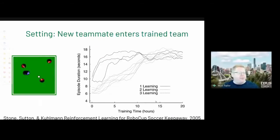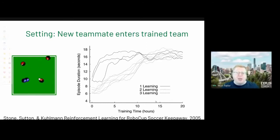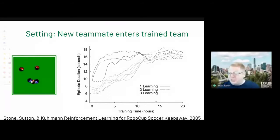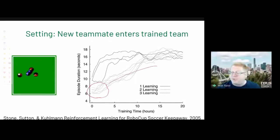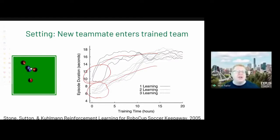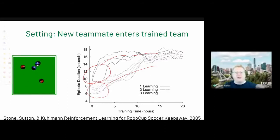A concrete example: learning three-versus-two keep-away, where three keepers in red try to keep the ball away from two takers in blue. If two agents are already trained and only one new agent is learning, you get better performance than if all three are learning simultaneously. The newbie learns faster from good teammates compared to learning alongside agents that don't know what they're doing.